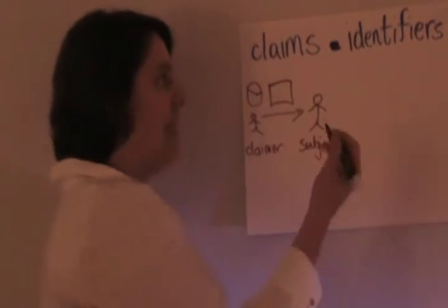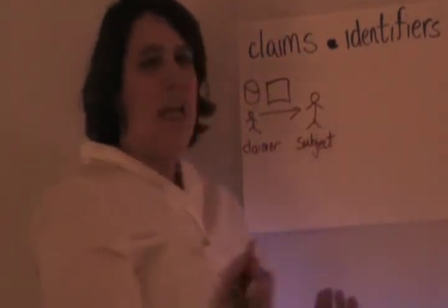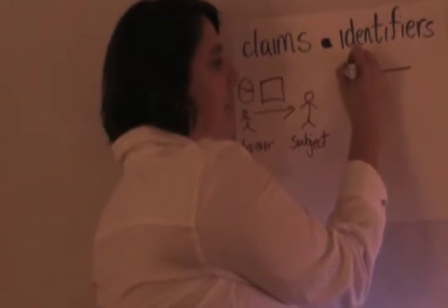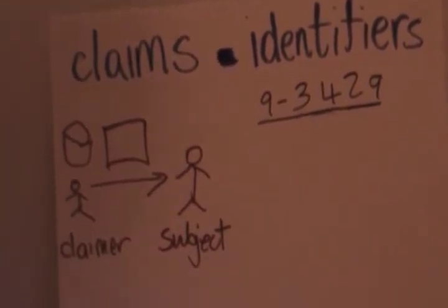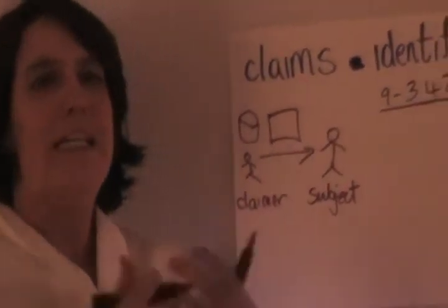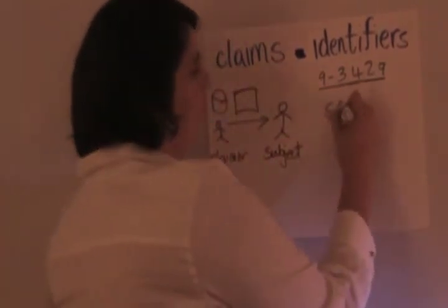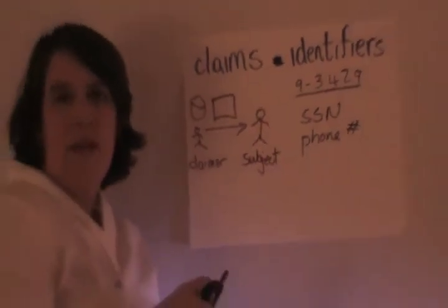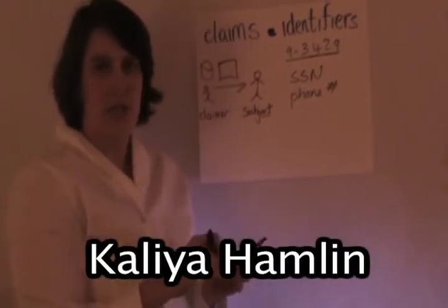A different form of identity is an identifier — a specific pointer. In both instances articulated — a birth certificate and a driver's license — they have numbers on them that identify that particular document. Another example is a social security number: it identifies you, giving you a number within the giant namespace of social security numbers. Another example is a phone number, which gives you a number in the context of the global phone system — a network of numbers administered internationally by the International Telecommunications Union.